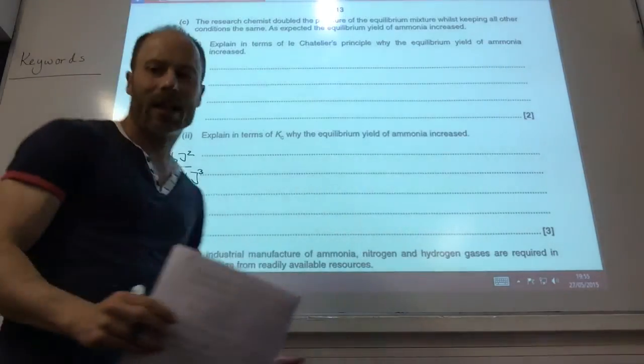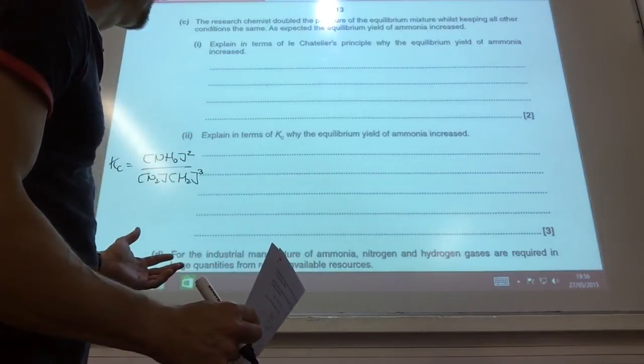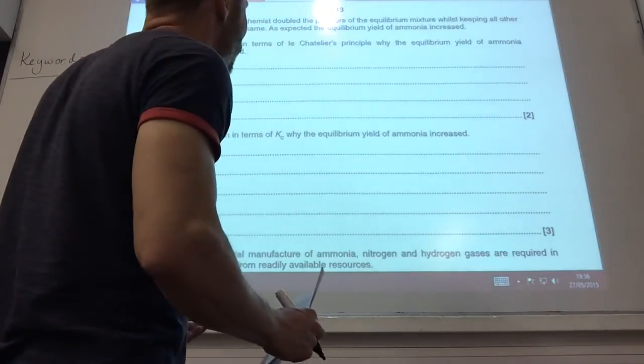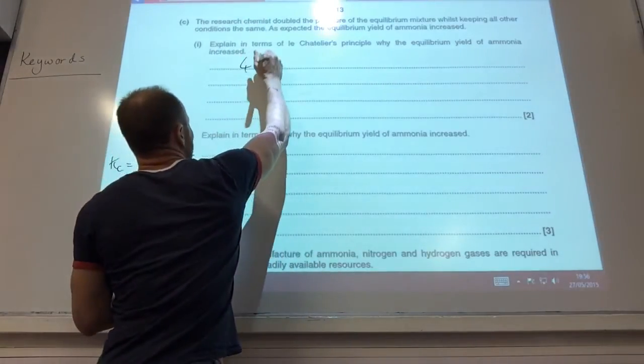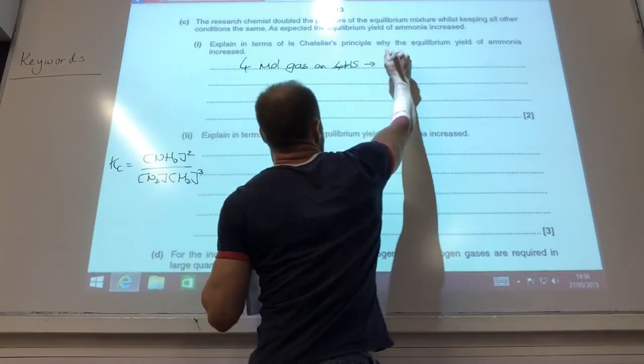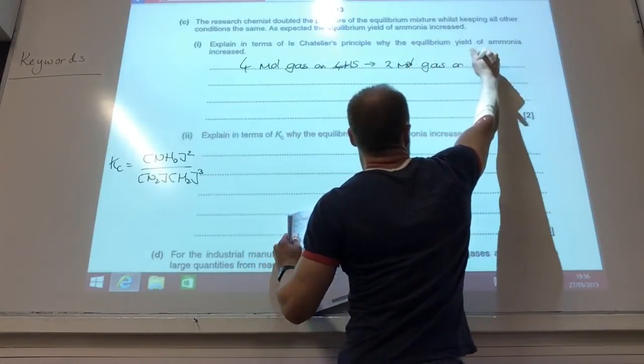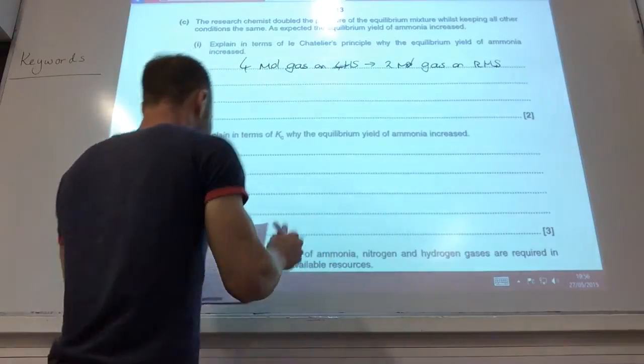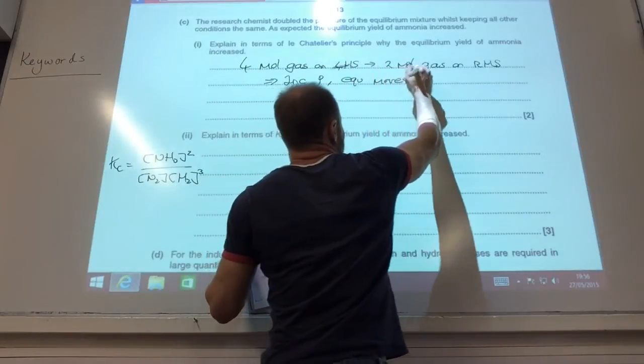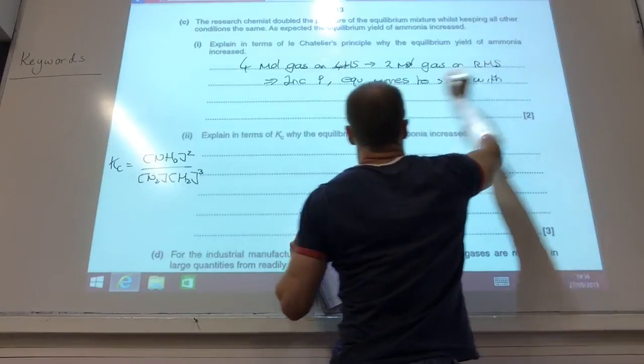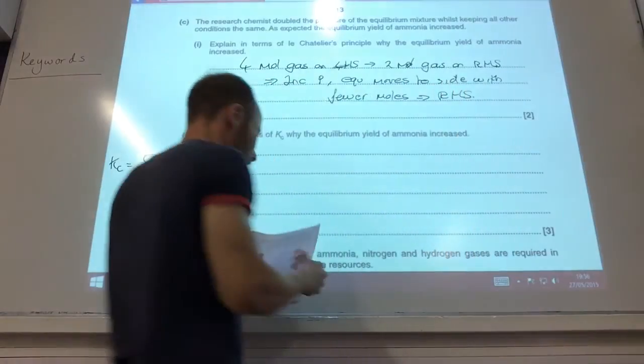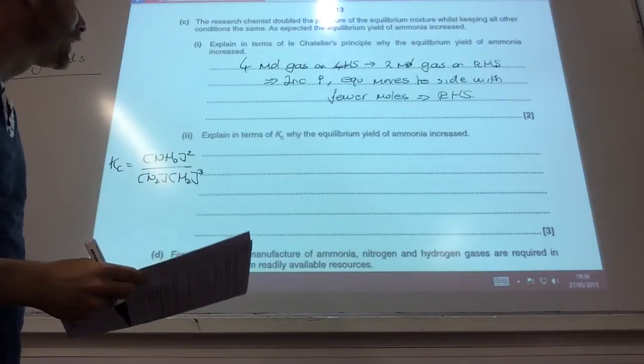Now we go back to some AS chemistry. Explain in terms of Le Chatelier's principle why the equilibrium yield of ammonia is increased when I increase pressure. Well, I've got 4 moles of gas on the left-hand side, going to 2 moles of gas on the right-hand side. When I increase pressure, equilibrium moves to side with fewer moles, which is therefore the right-hand side. And therefore, the yield of ammonia is going to increase.